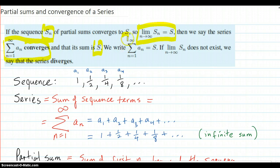So you can write the series sum equals S. If S_n does not exist by way of either going to infinity or flip-flopping back and forth, something like that, then we say the series diverges.